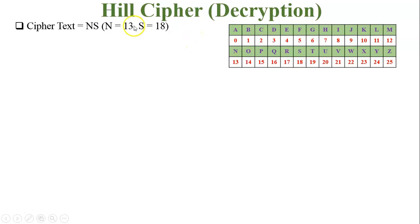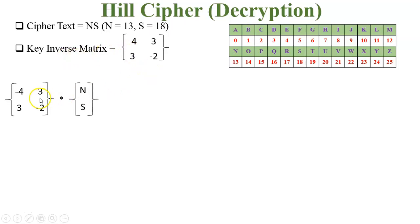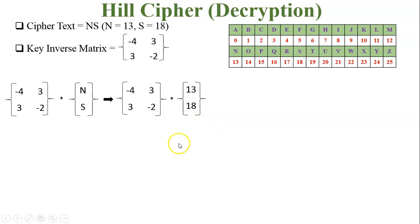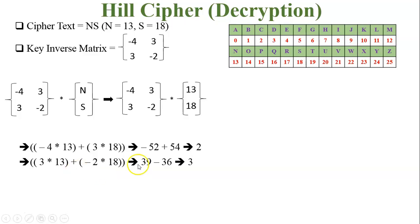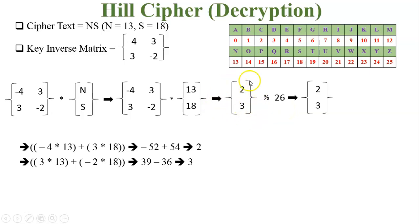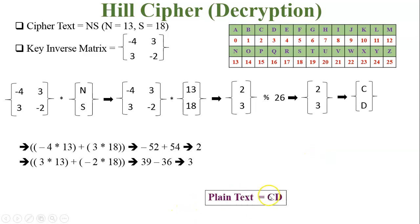Cipher text NS: N=13, S=18. Multiply the inverse key matrix by cipher text vector [13, 18]. The multiplication gives resultant matrix [2, 3]. Modulus 26 is not required here as values are less than 26. Convert numbers back to characters: 2=C, 3=D. Plain text is CD. This completes the decryption process using a 2×2 key matrix.